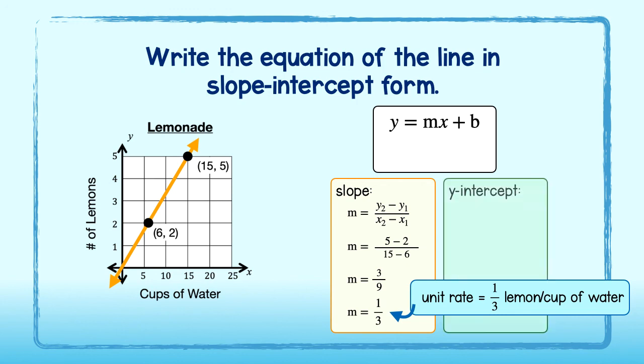Now let's identify the y-intercept, or the point where the graph crosses the y-axis. Since the graph is proportional, it crosses right here at the origin. So, b is equal to 0, and our equation is y equals 1 third x. Great job!